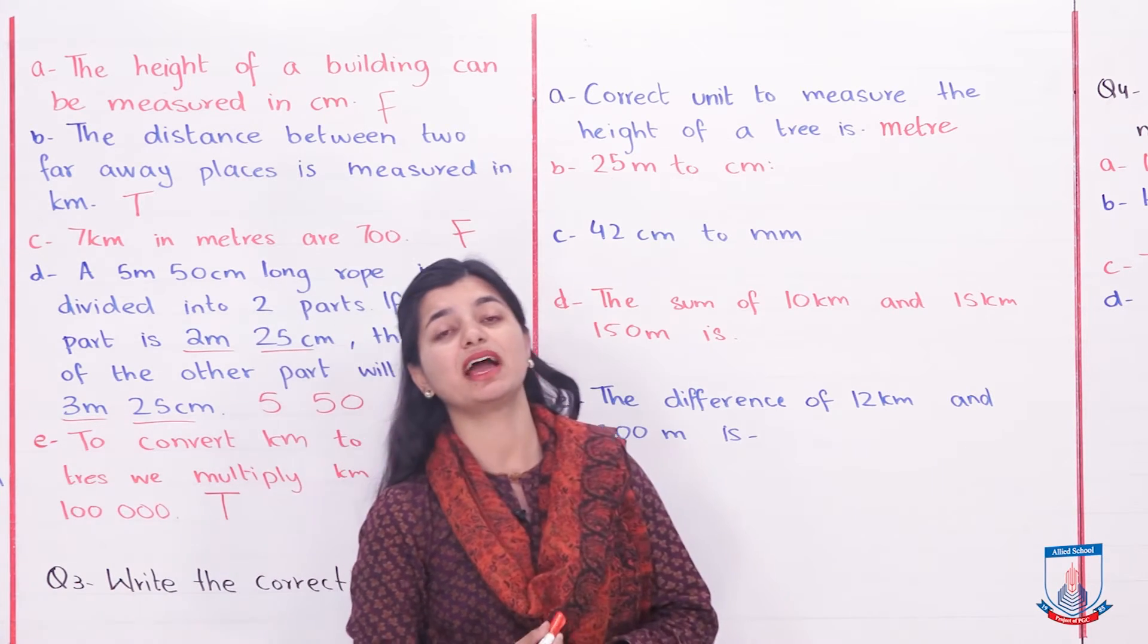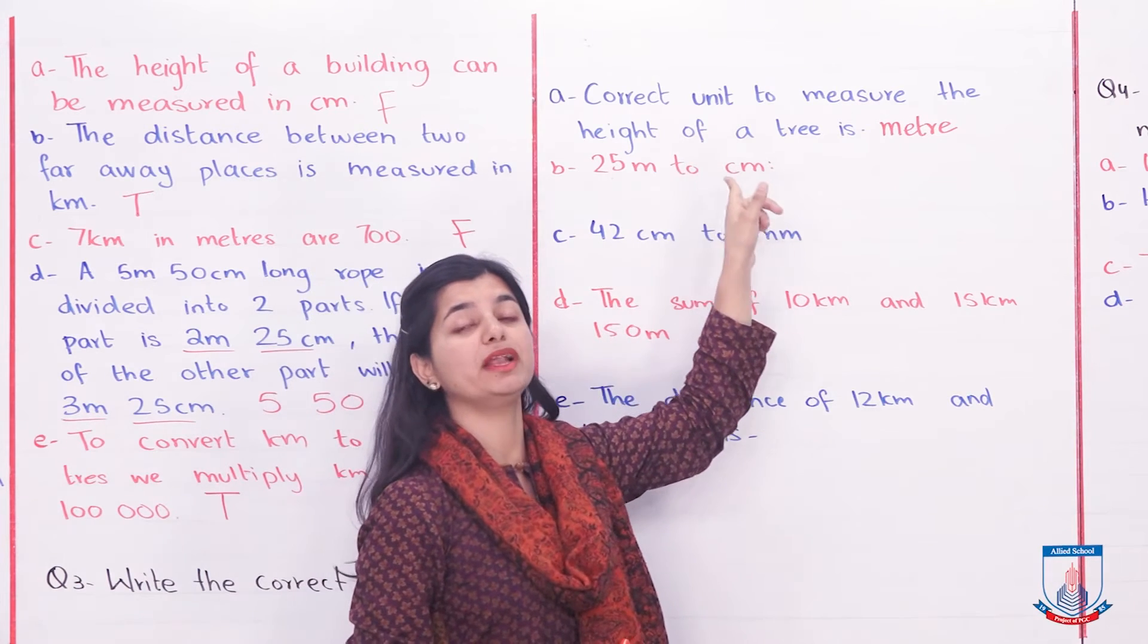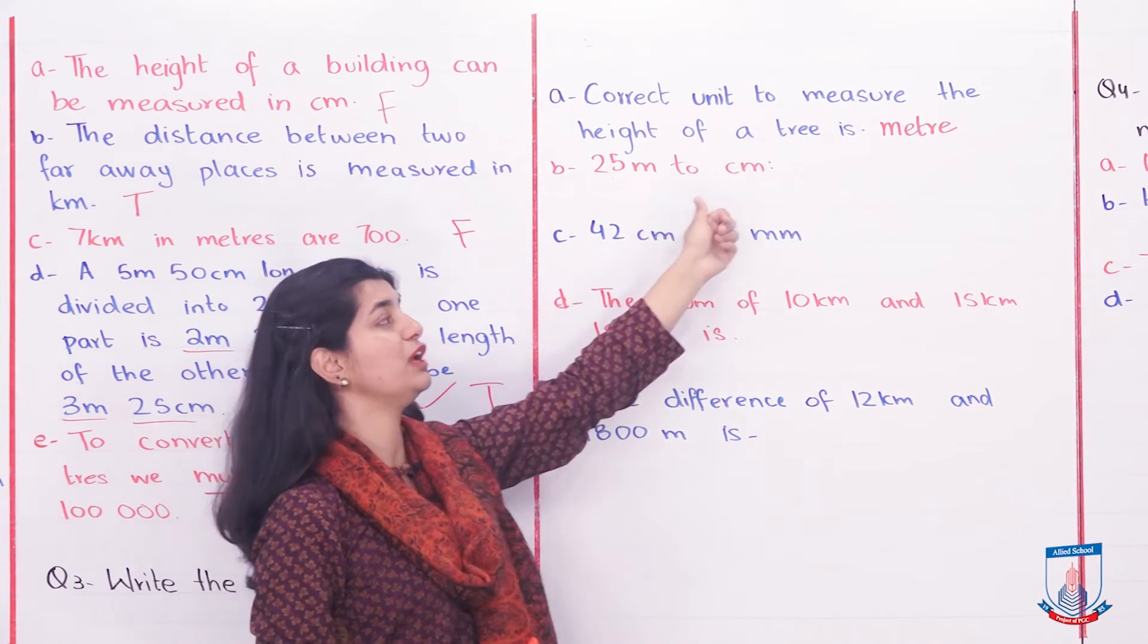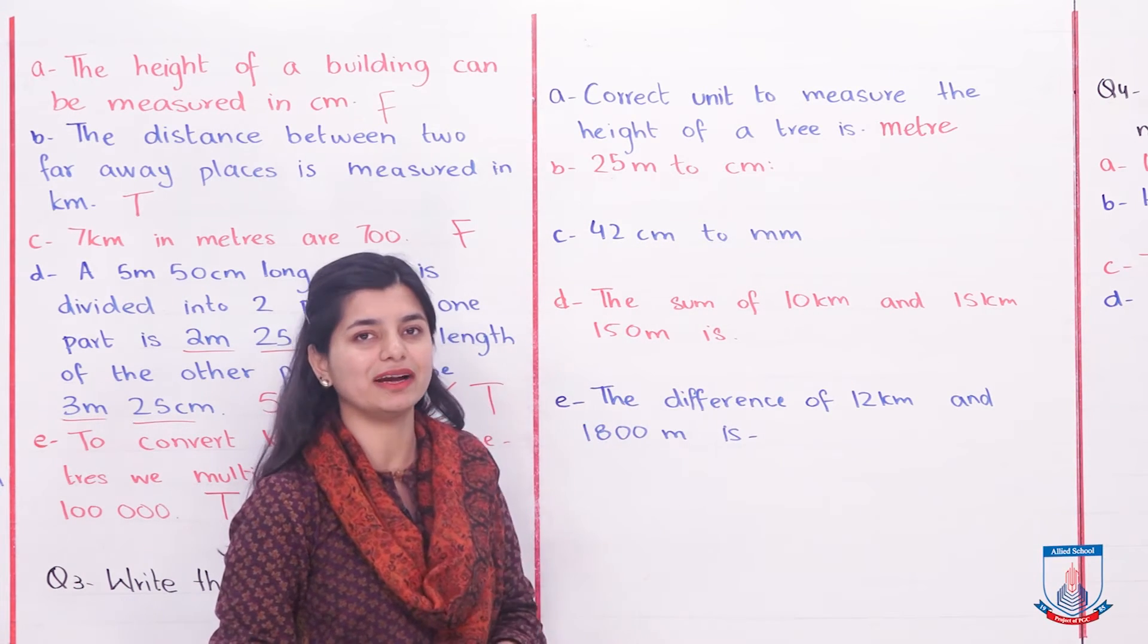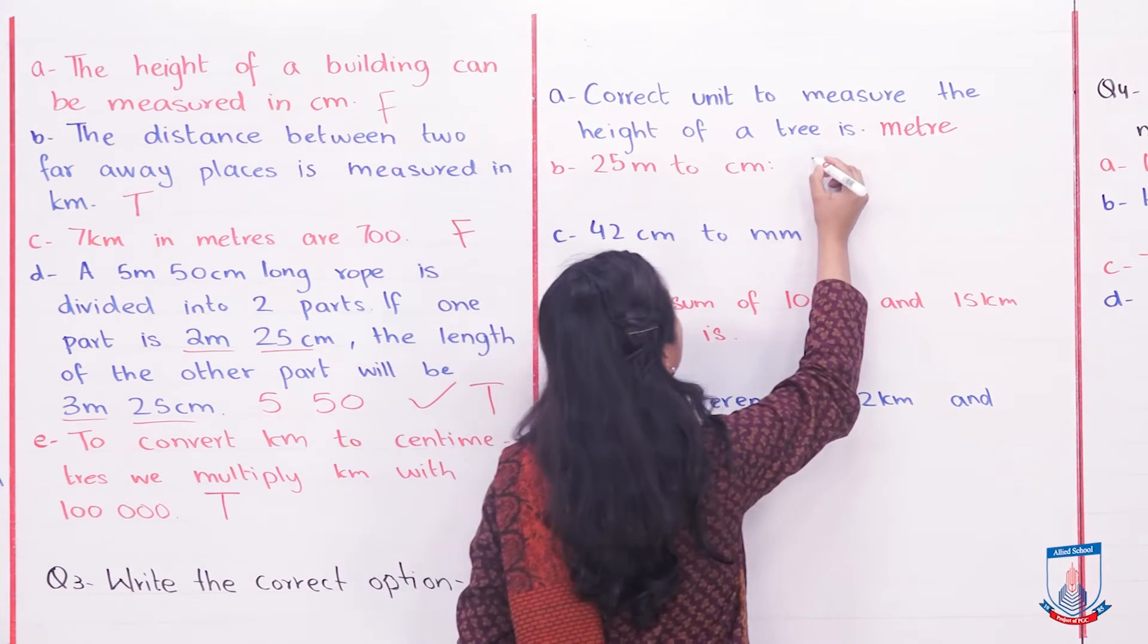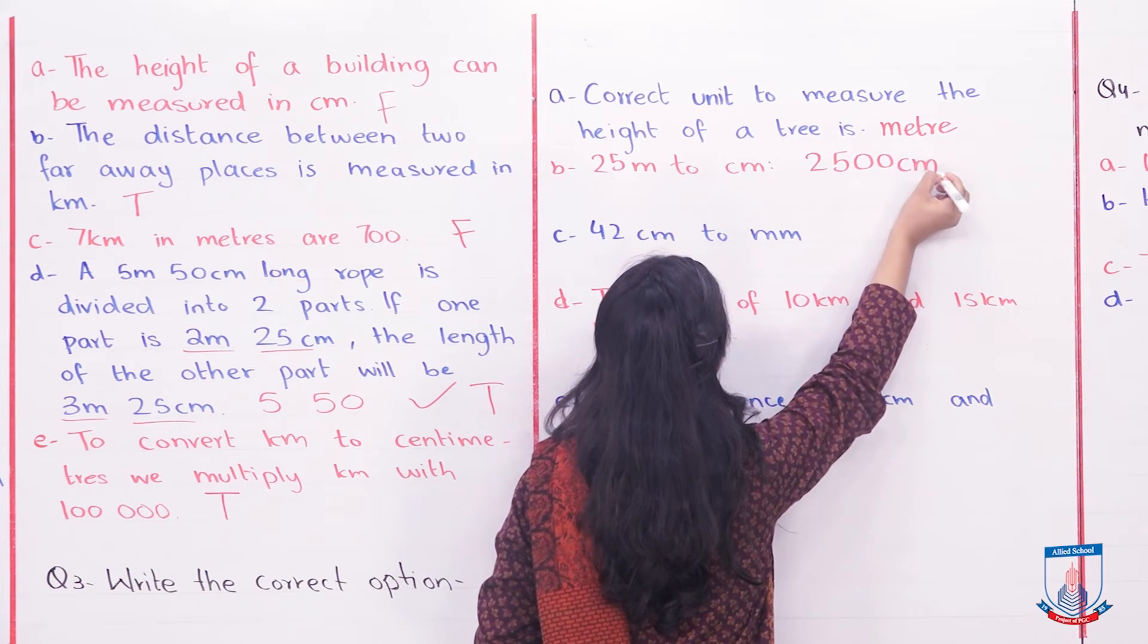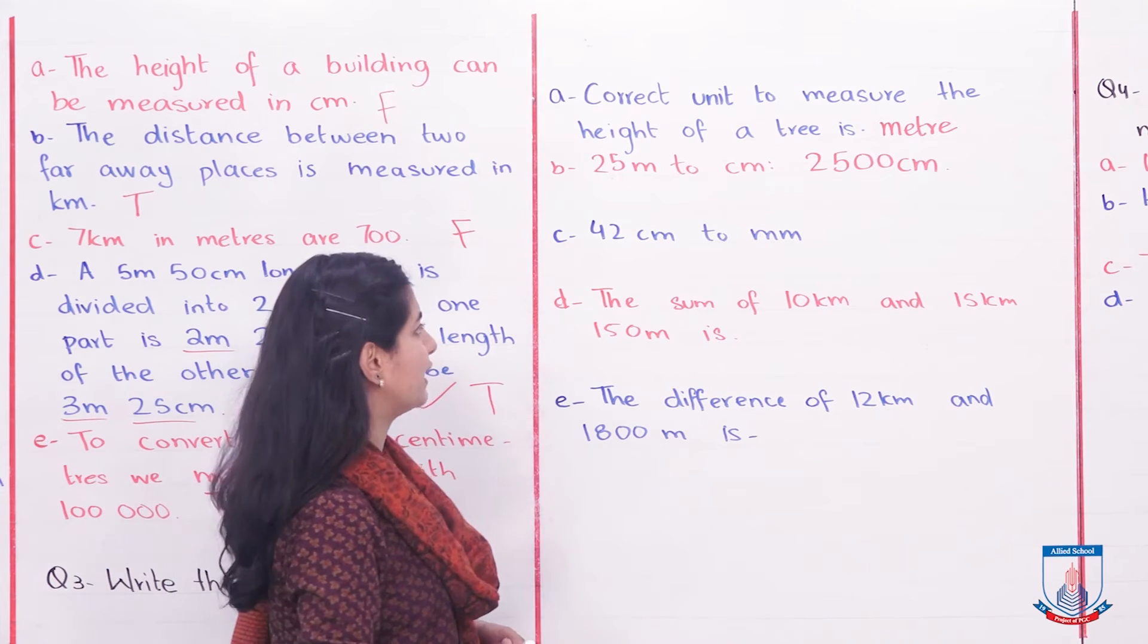Part B: 25 meters into centimeters. Meters to centimeters, big to small, we will multiply. Because 1 meter equals 100 centimeters, we multiply 25 by 100. The answer is 2500 centimeters, and this is your correct option.